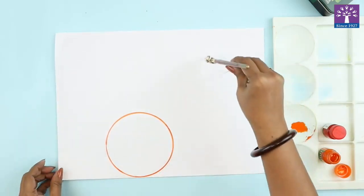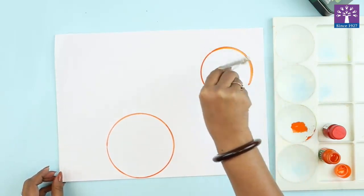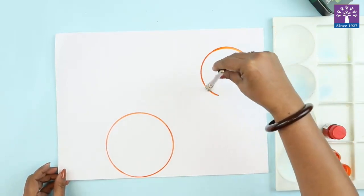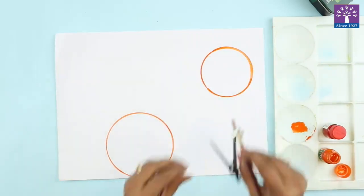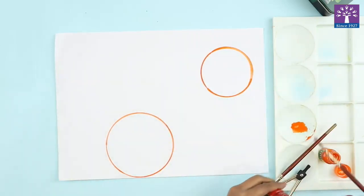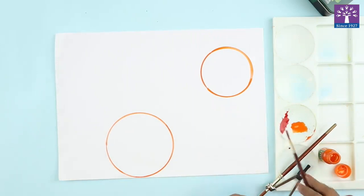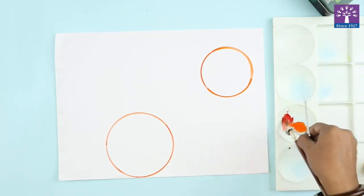So we are just going to paint circles with different colors on this drawing sheet. Take another color, dip your brush in the second color.